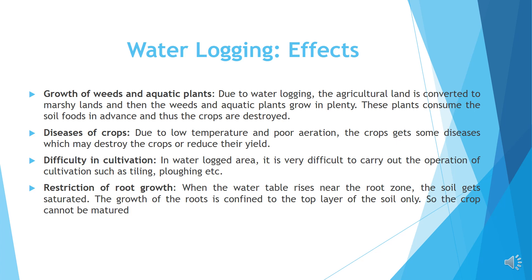Difficulty in cultivation: In waterlogged areas it is very difficult to carry out cultivation operations such as tilling, ploughing, etc. Restriction of root growth: When the water table rises near the root zone, the soil gets saturated. The growth of the roots is confined to the top layer of the soil only.